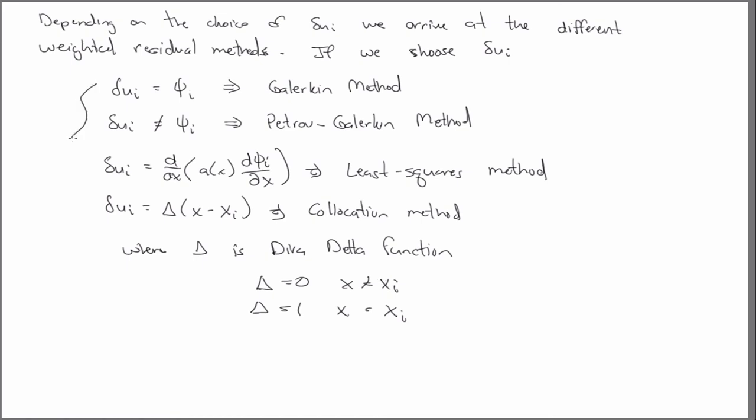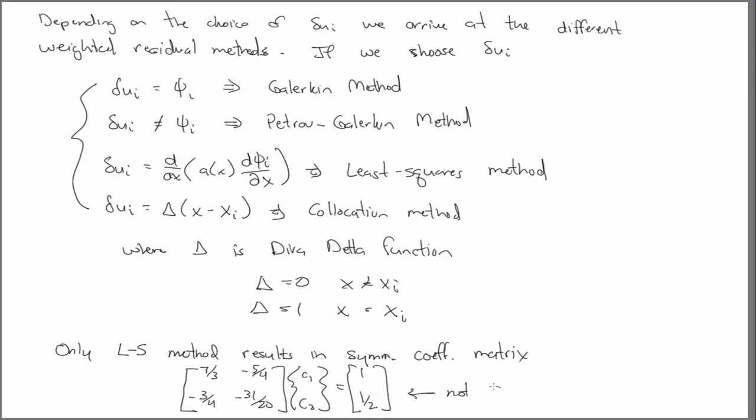So of all these four methods, only the least squared method results in a symmetric matrix, a coefficient matrix. So in the last example, I didn't write it out, but if we would have wrote out, evaluated all those terms, that we would have had this matrix. So it's obviously not symmetric. And that's because we were using basically what amounts to Petrov-Galerkin scheme.